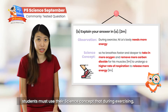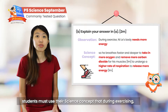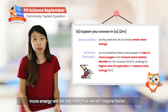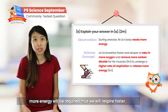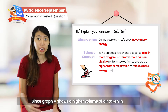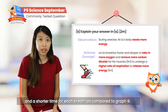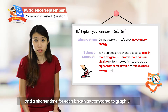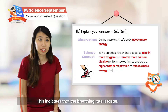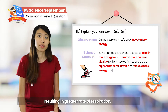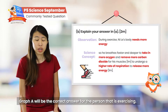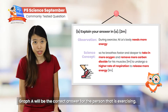For Part A, students have to use the science concept that during exercising, more energy will be required, and thus we will respire faster. Since Graph A shows a higher volume of air going in and it actually took a shorter time for one breath compared to Graph B, it indicates that the breathing rate is faster, resulting in faster respiration. So Graph A will be the correct answer for the person that is exercising.